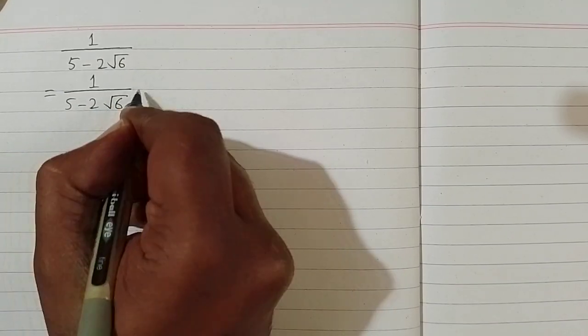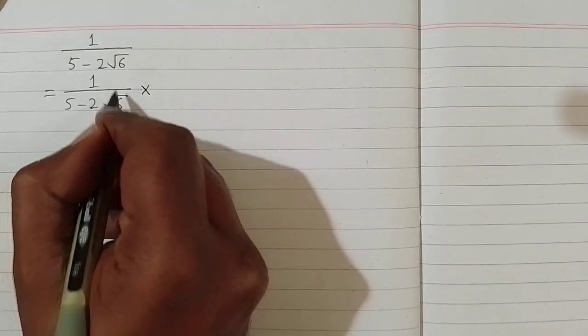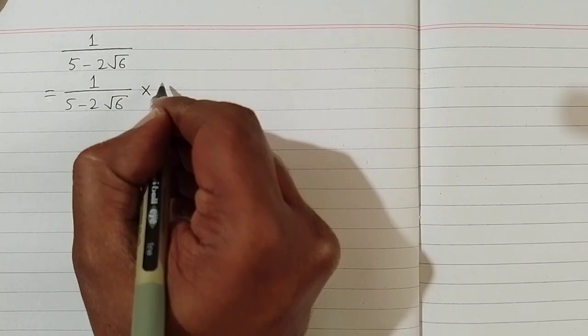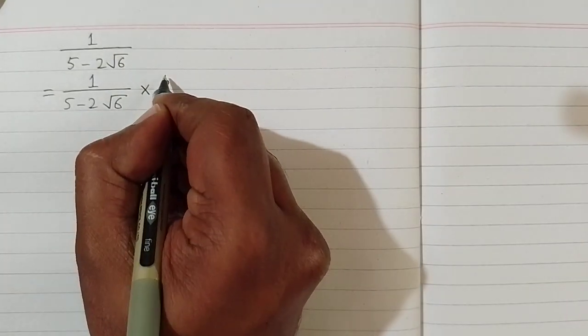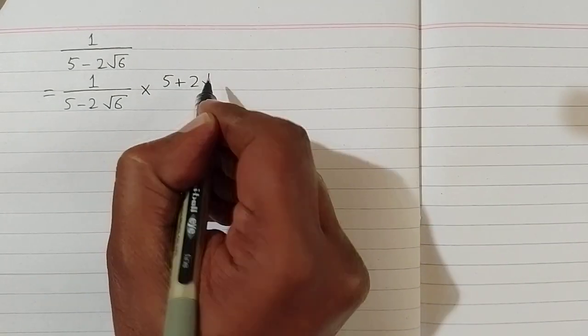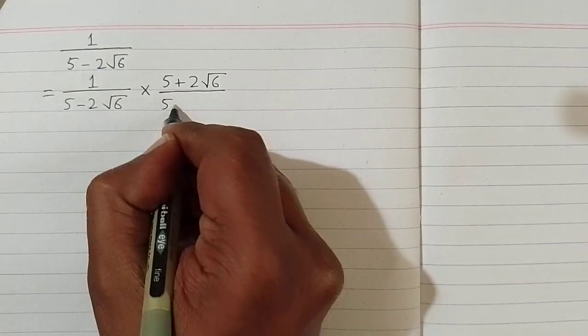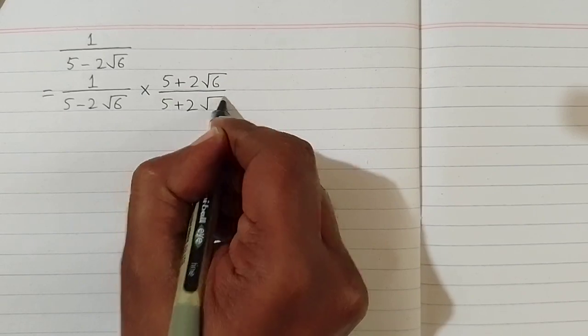So we will multiply and divide this fraction by the conjugate of the denominator. And the conjugate of the denominator is 5 plus 2 times square root of 6 upon 5 plus 2 times square root of 6.